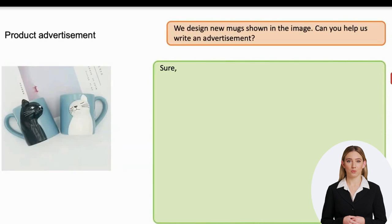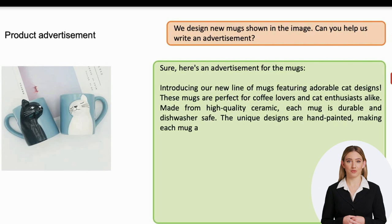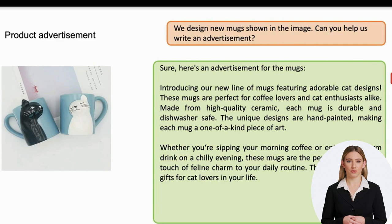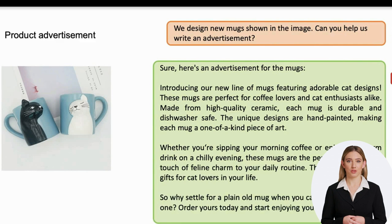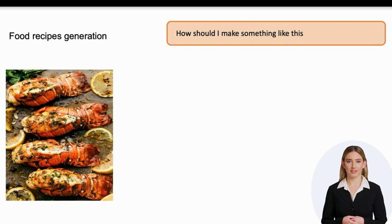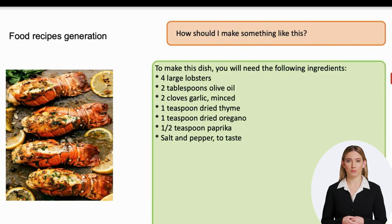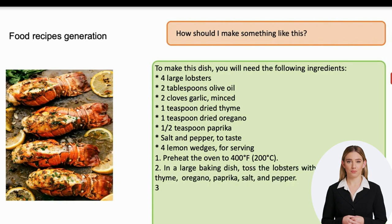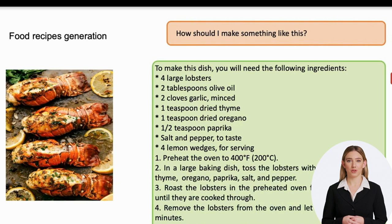Someone uploaded a photo of two mugs and asked for an advertising text. The resulting text looks very professional and creative. The tool was able to describe the image well and write a professional ad, so you can also use this tool to make ads or write captions for Instagram posts. In another example, the AI tool was asked how to make a dish similar to the one in the photo. The tool provided a list of required ingredients and detailed instructions on how to cook the dish accurately.